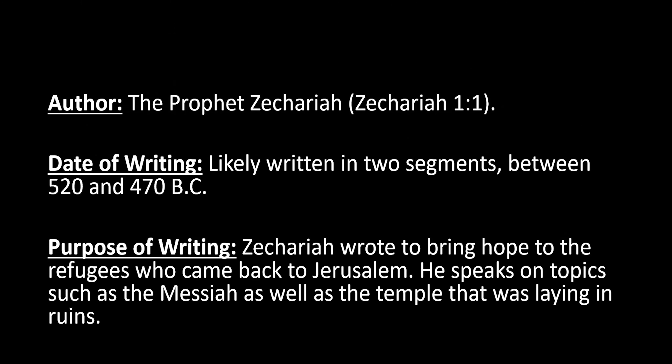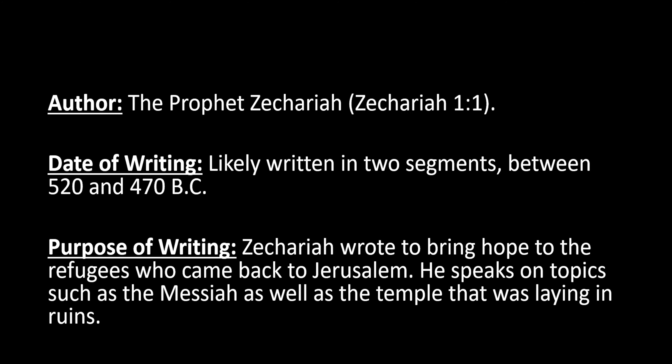The book of Zechariah has 14 chapters, so it's a good bit of substance. This is going to be an overview, so we can't spend a lot of time on everything. We're going to do it chapter by chapter, quick overview, walk through some verses, and basically give you the tent poles or tools to better understand when reading this book. The author is Zechariah, date of writing about 520 to 470 BC. He is writing to refugees who have come back from exile, offering them encouraging hope as they look at the temple laying in ruins.